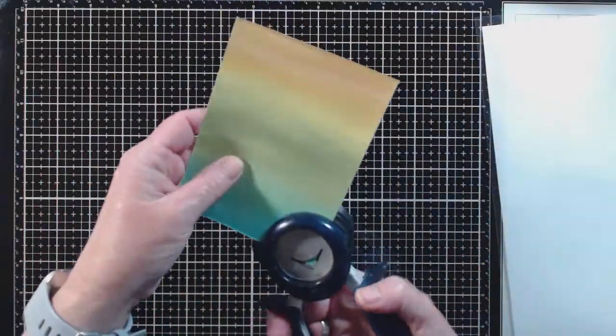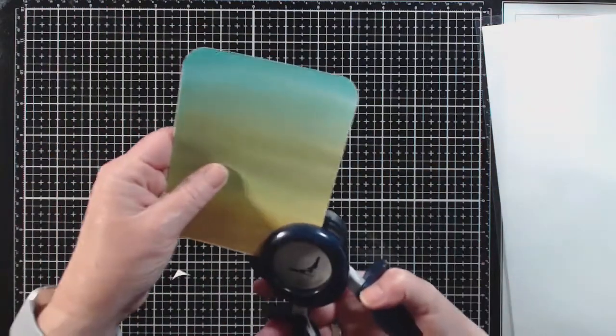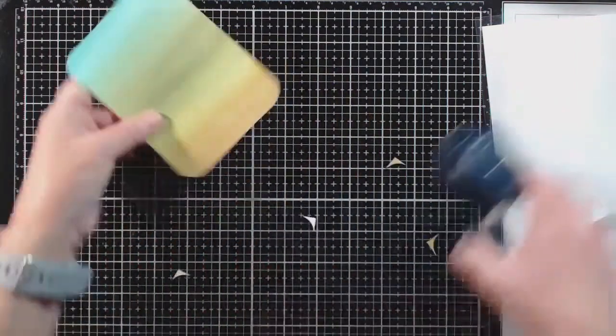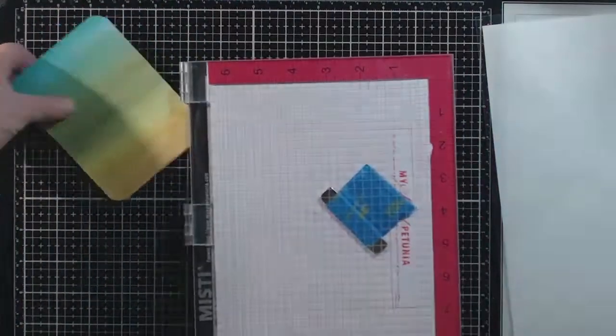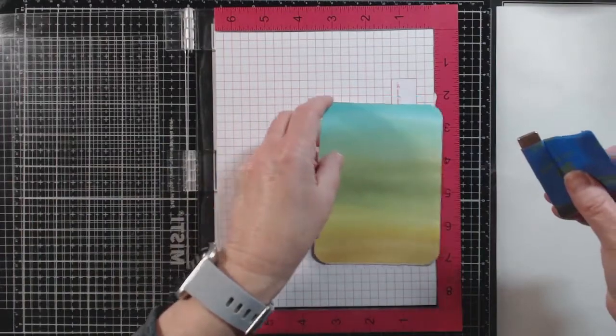For cards like this I want a nice soft look to it and rounding corners can do that for you. So I rounded my corners here and now it's time to stamp the flowers on there.